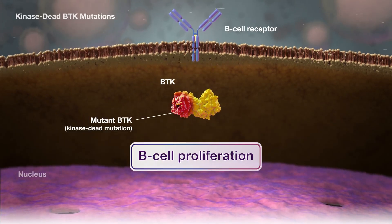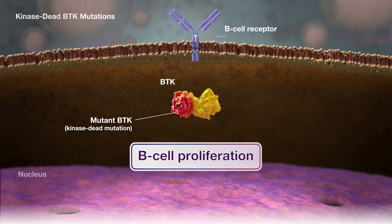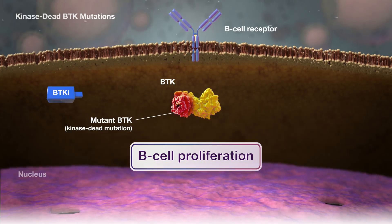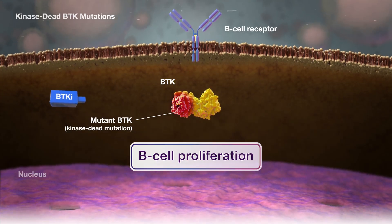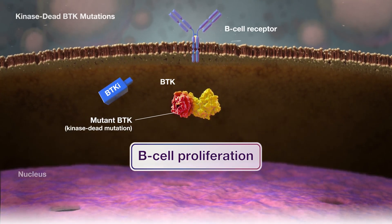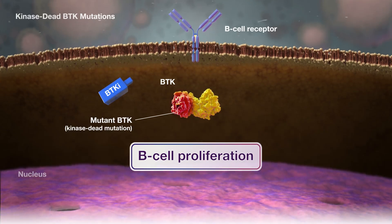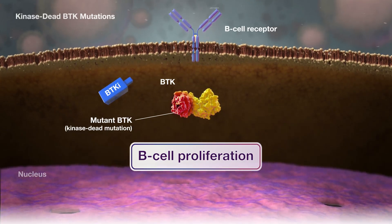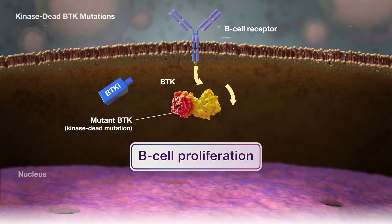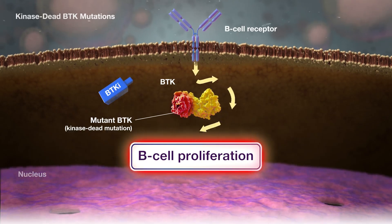In the case of kinase-dead mutations, a mutation in the kinase domain of BTK causes an amino acid change similar to kinase-proficient mutations. This prevents BTKIs from binding to BTK. Kinase-dead mutations also disable BTK enzymatic activity, meaning that BTK is unable to send signals to other proteins. Despite this, B-cell receptor signaling remains active by circumventing BTK, which induces B-cell proliferation.